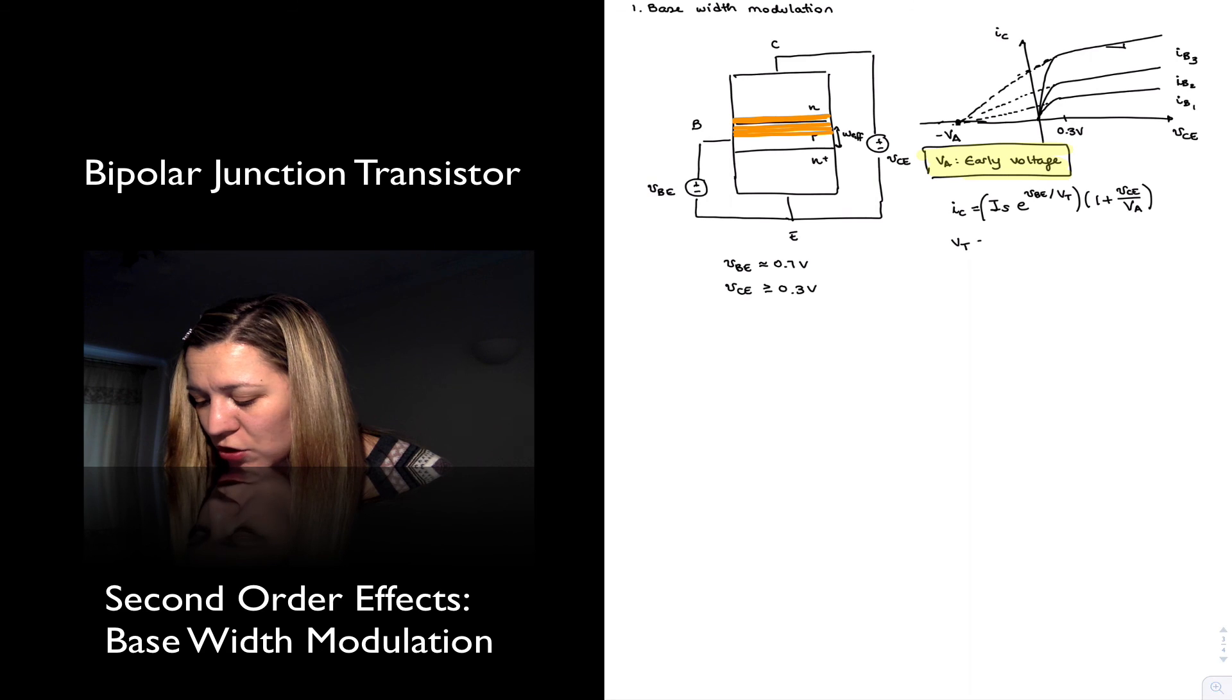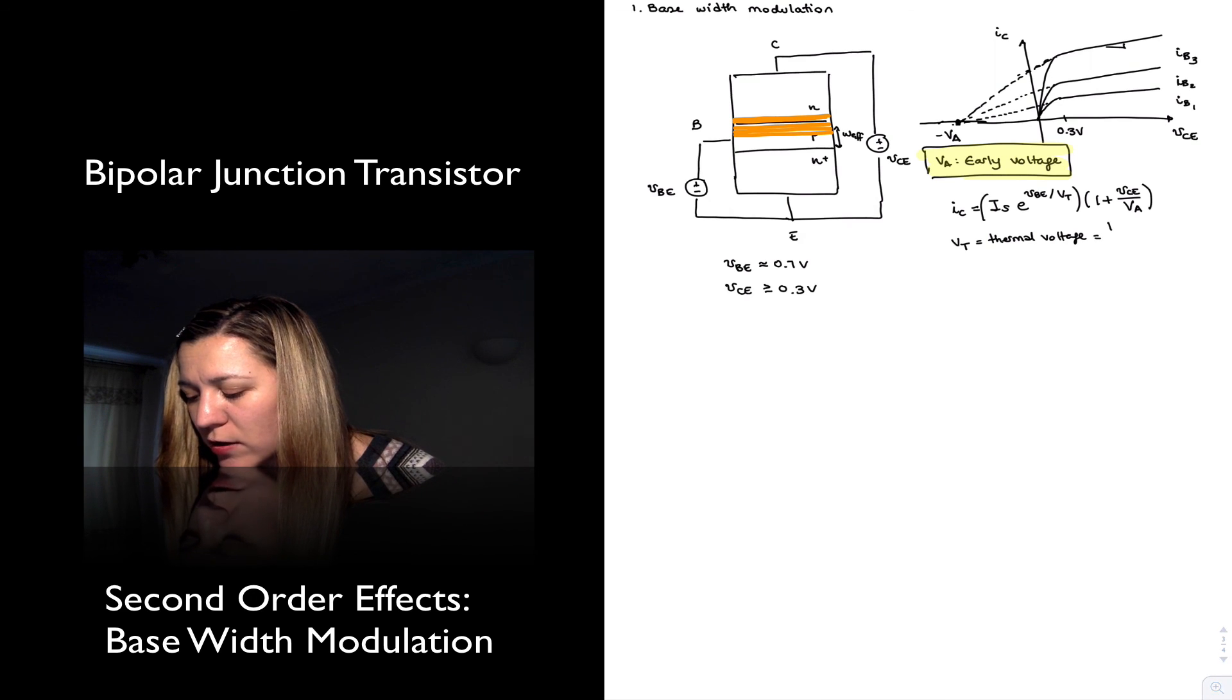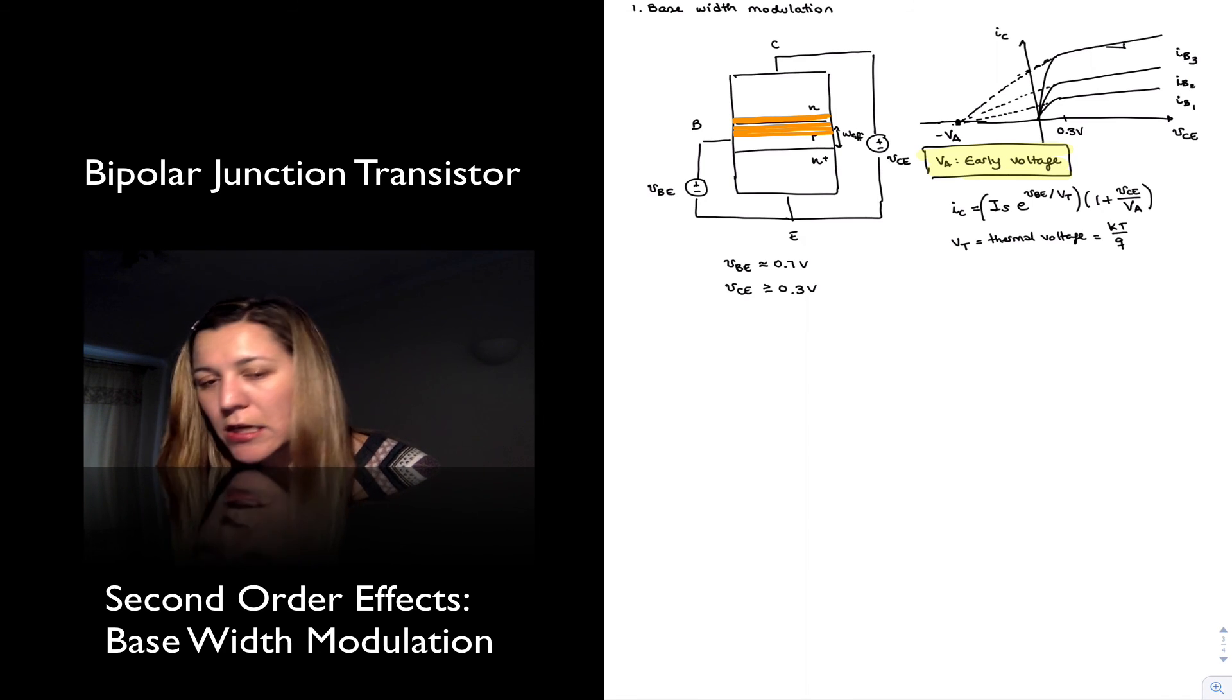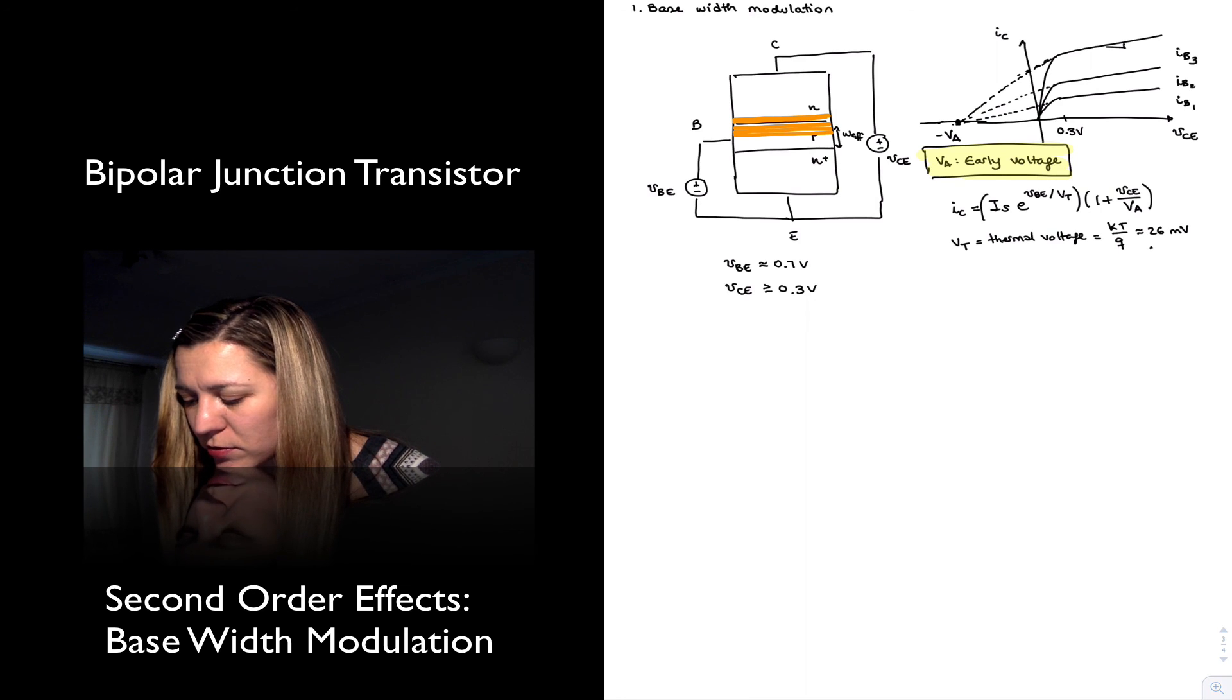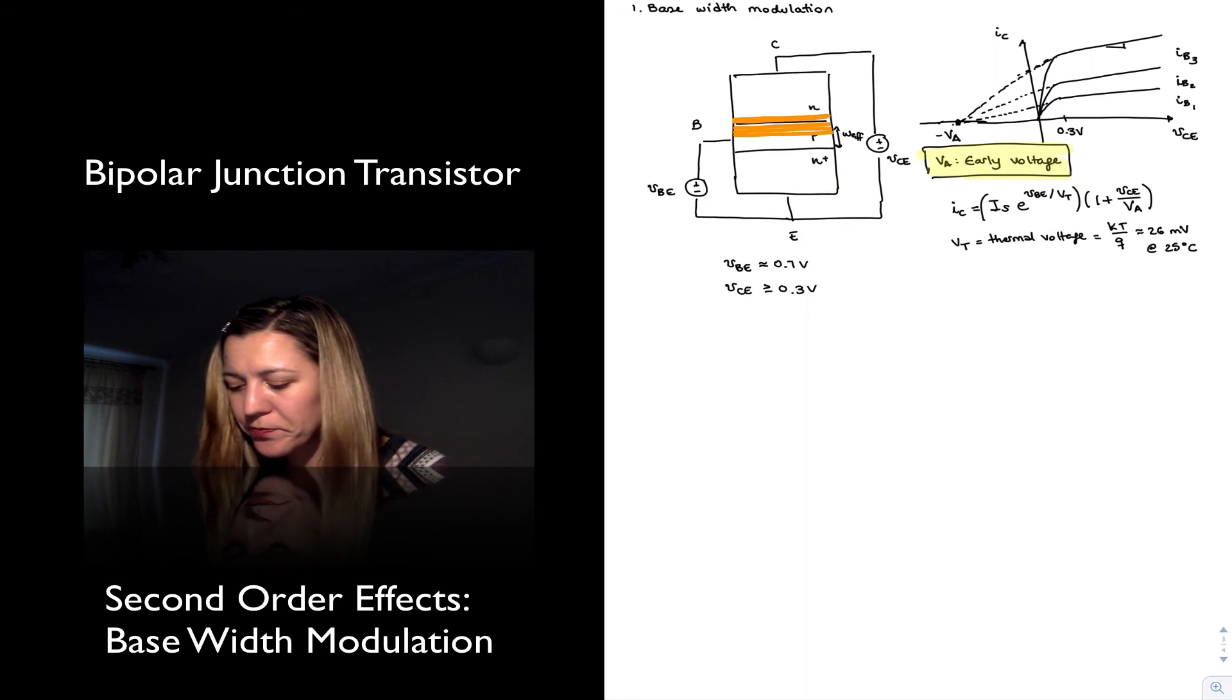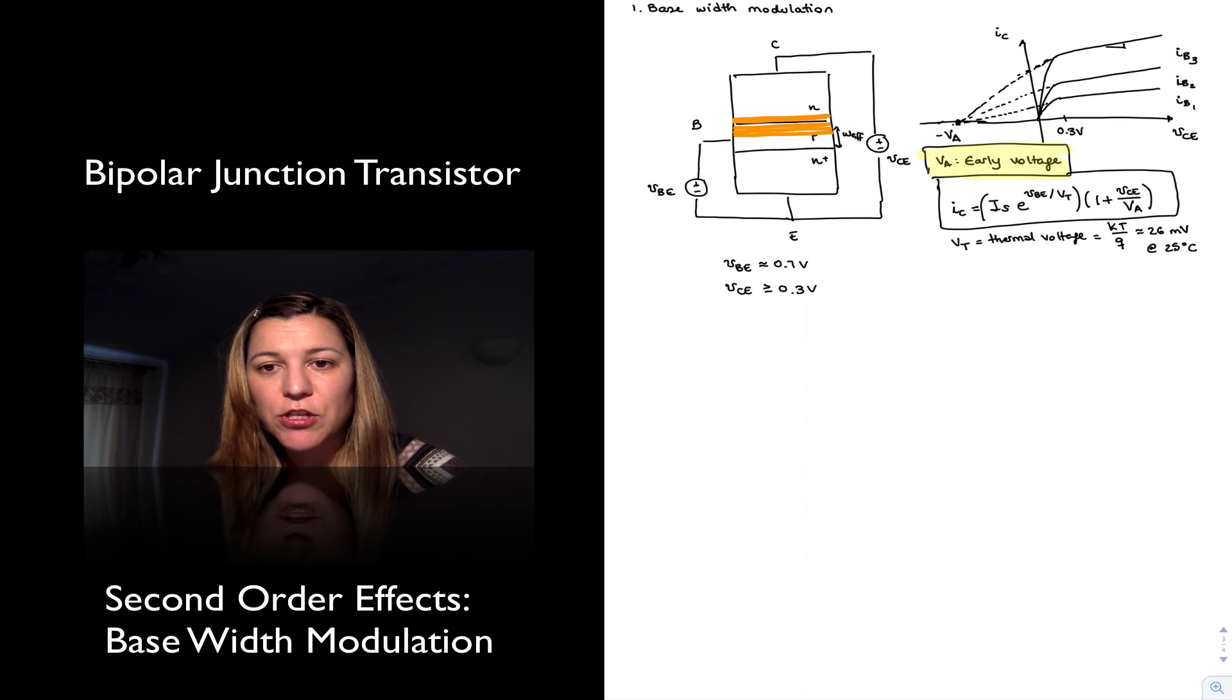VT obviously is the thermal voltage, which you may remember from your lesson on diodes. Its value is KT divided by Q, where K is the Boltzmann's constant, T is the temperature, and Q is the elementary charge or the charge of the electron. And the value of it is approximately 26 millivolts at room temperature at 25 degrees. All right, so, and this will be, again, that expression considering the base-width modulation effect. So, our second-order equation for our transistor.